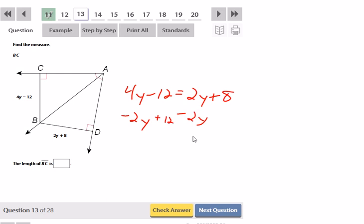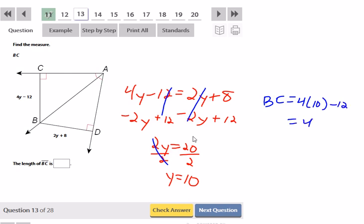Minus 2Y on both sides, which is going to allow me to do plus 12 on both sides. And I get that 2Y is equal to 20. If I divide by 2, Y is equal to 10. Well, we didn't want Y. We wanted the length of BC. So, therefore, BC is going to be equal to 4 times 10 minus 12, which is 40 minus 12, which is 28.